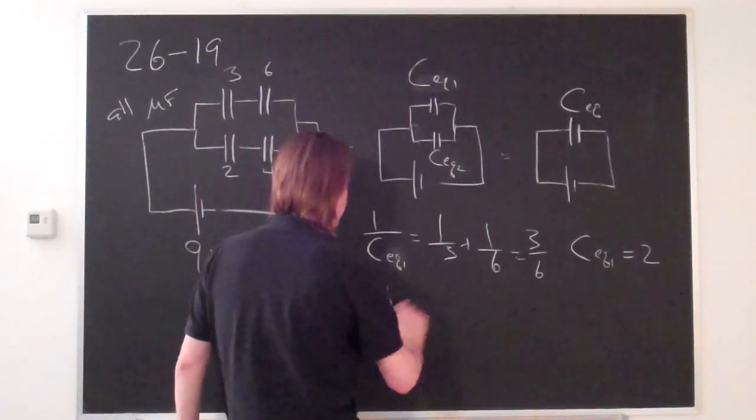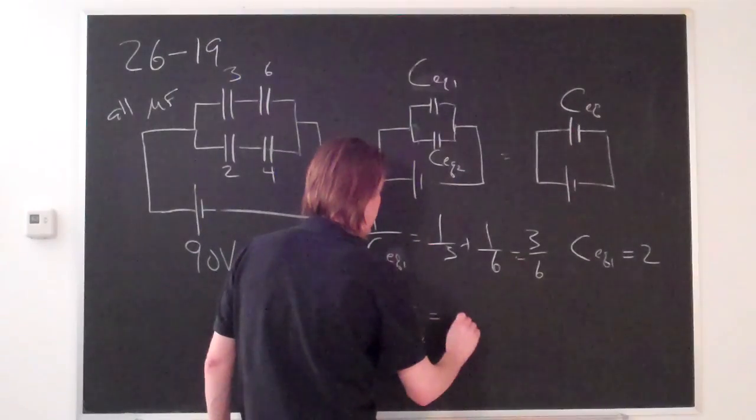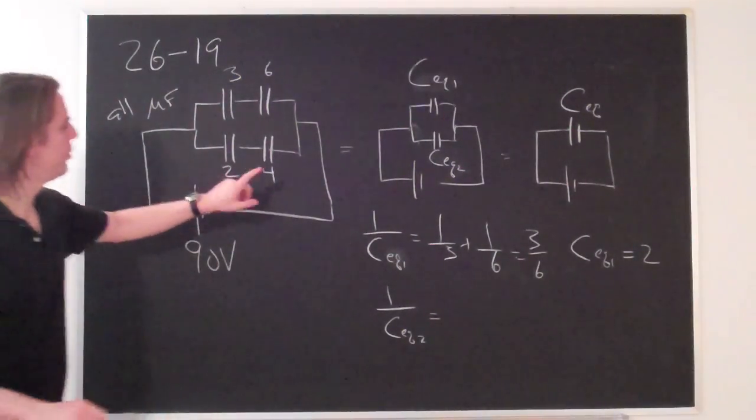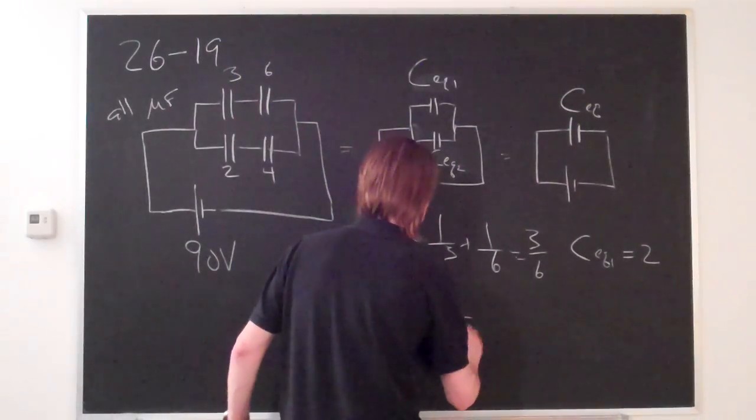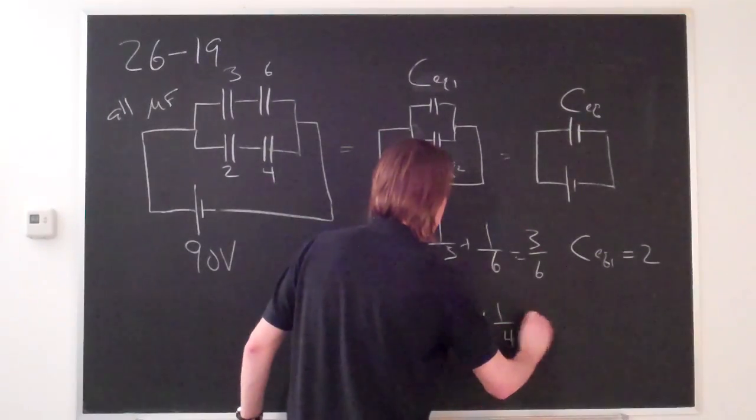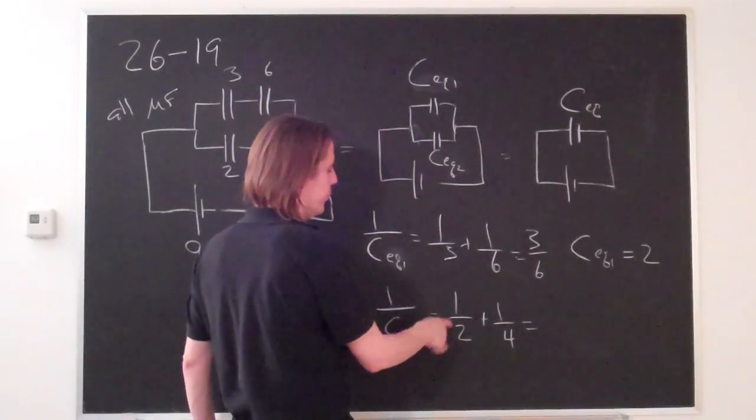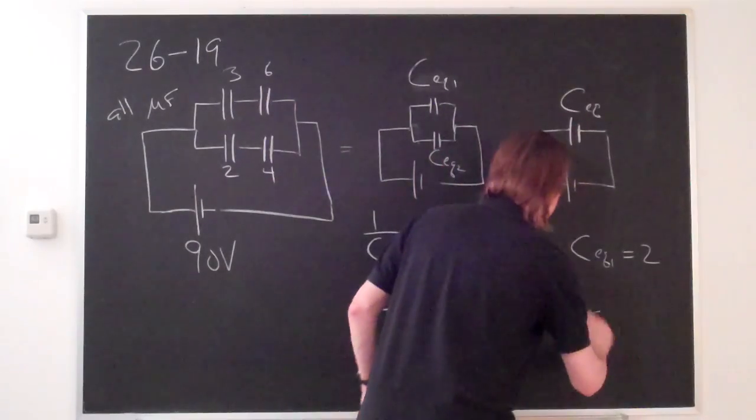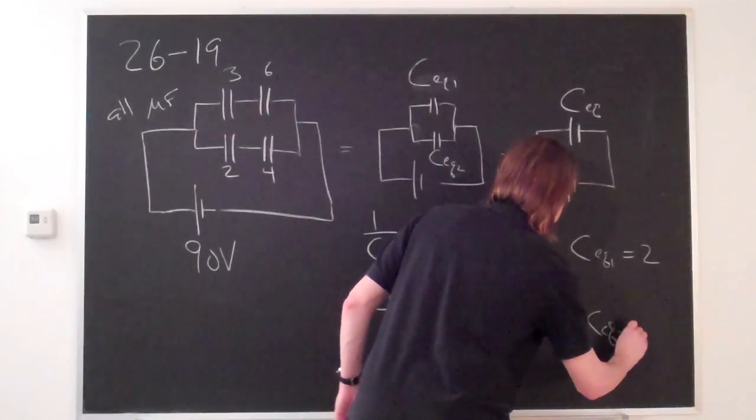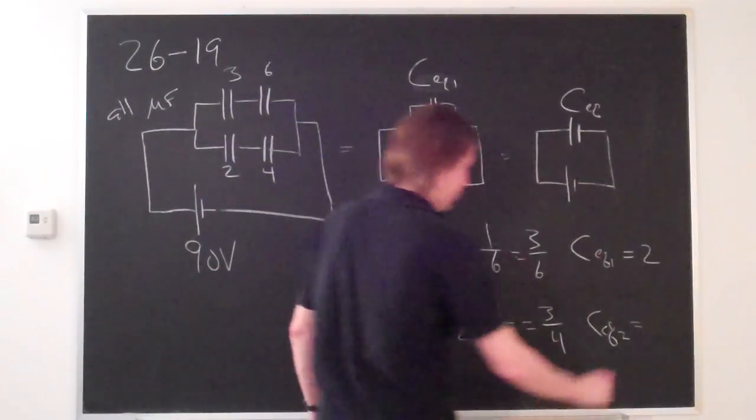1 over C_eq2 equals 1 over 2 plus 1 over 4, which equals 3 over 4. So C_eq2 equals 1.33 microfarads.